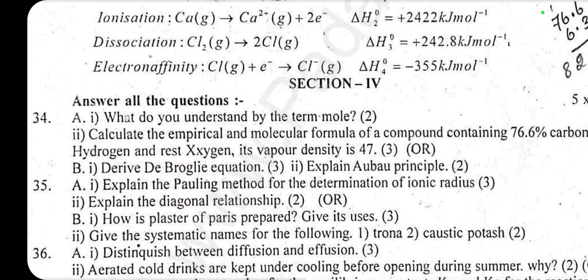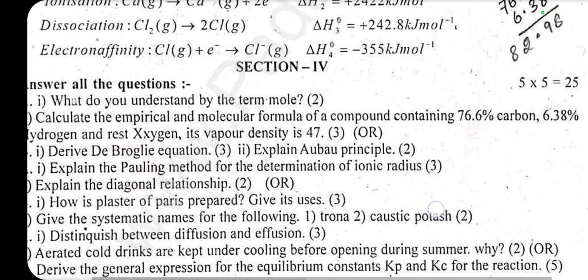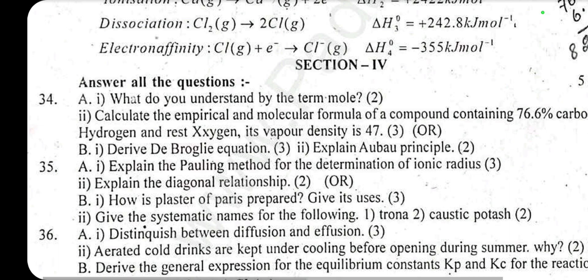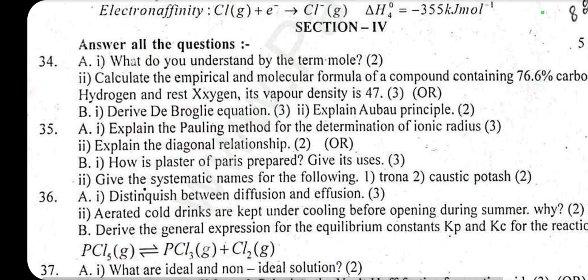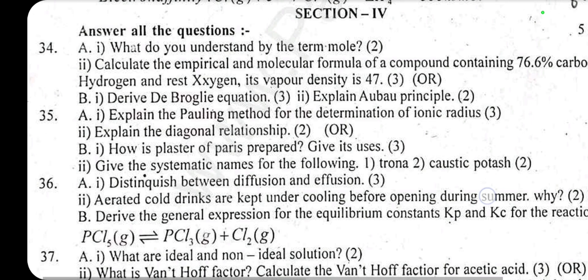Define mole. Find empirical formula from: 76.6% carbon, 6.38% hydrogen, and rest is oxygen, with vapor density 47 — find empirical and molecular formula. Derive the de Broglie equation (3 marks). Aufbau principle (2 marks). Pauling's method for determination of ionic radius (3 marks). Diagonal relationship (2 marks).